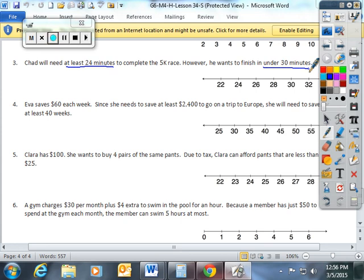Now, number four. Ava saves $60 each week. Since she needs to save at least $2,400 to go on a trip to Europe, she will need to save for at least 40 weeks.